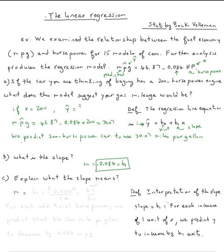Now the slope, or b₁, is negative 0.084, which is the same thing as negative 0.084 over 1. Remember, this is always change in y, in predicted y, over change in x. Or y₂ minus y₁, ŷ₂ minus ŷ₁ over x₂ minus x₁.